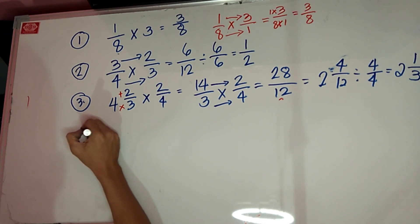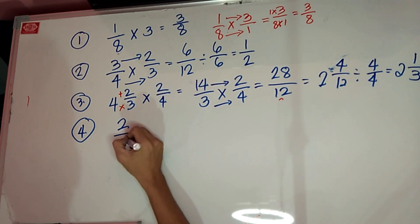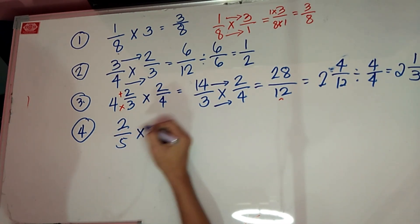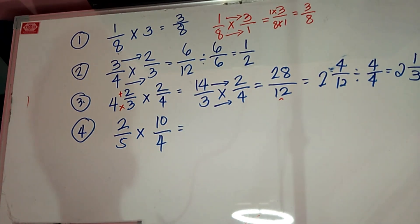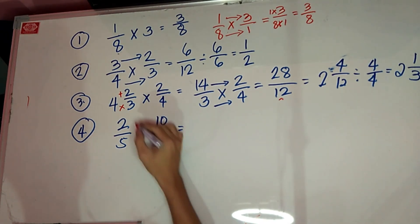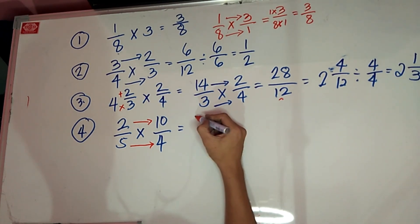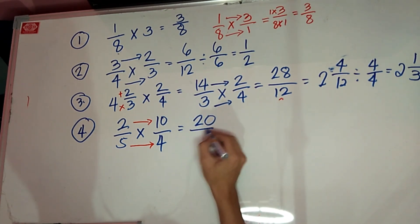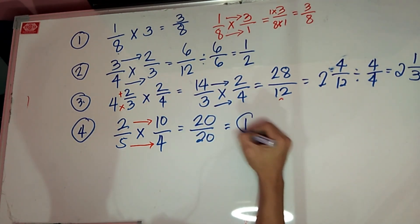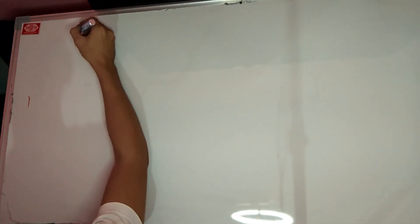Number 4: 2/5 times 10/4. Multiply numerator times numerator, denominator times denominator. That is 20 over 20, which equals 1. Easy! Another example: 3 and 1/3 times 5 and 1/4. This is mixed fraction times mixed fraction.